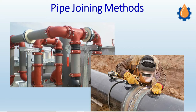Examples of temporary joints include threaded joints and flanges. Temporary joints are mostly preferred where welding is difficult — for example, on offshore oil rigs, flange joints and threaded connections are preferred. However, threaded connections are not preferred for high-pressure applications because of safety concerns.